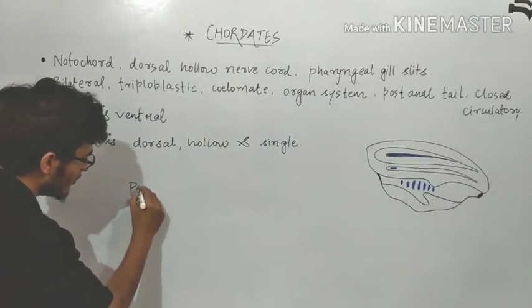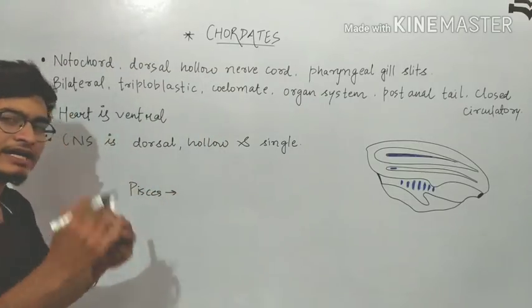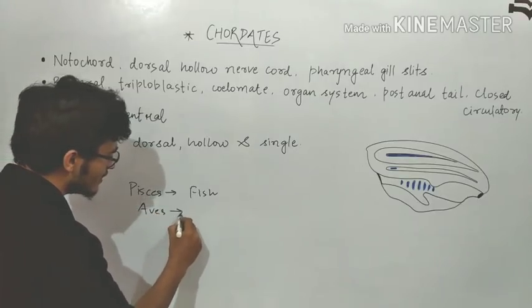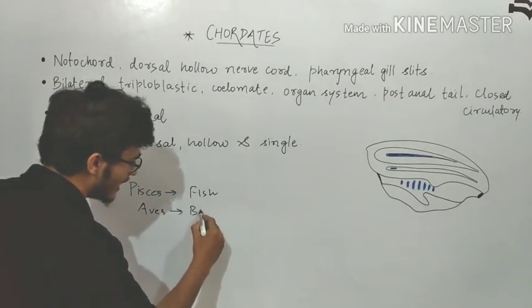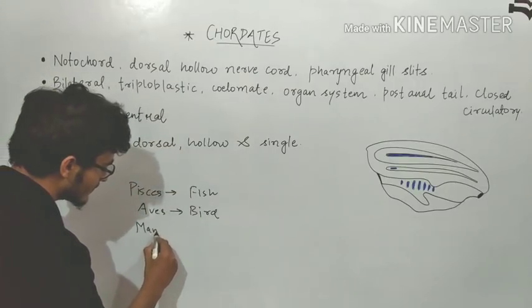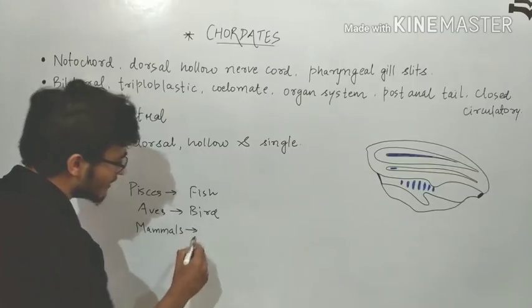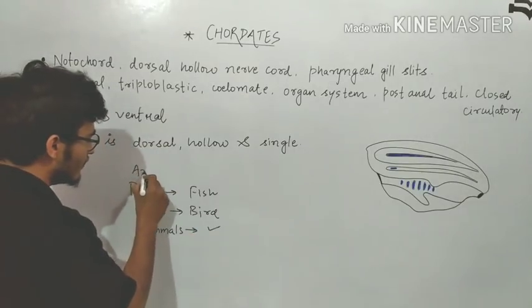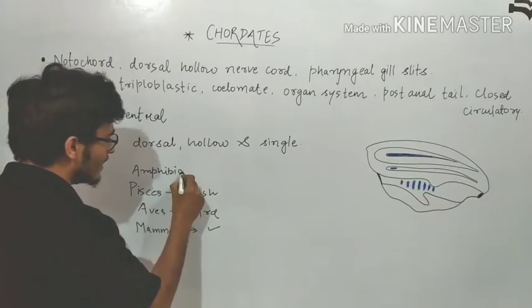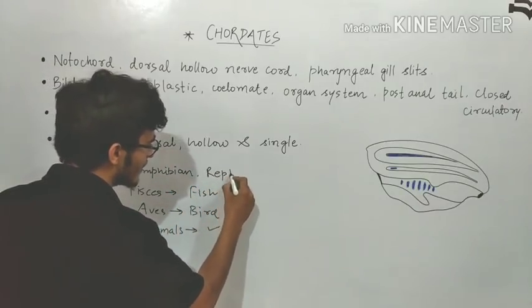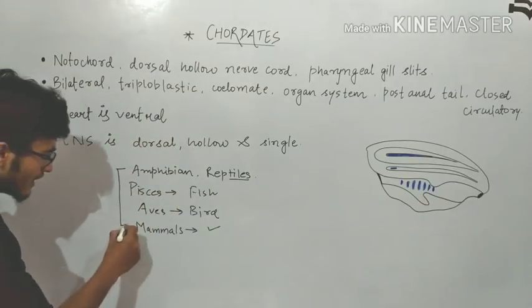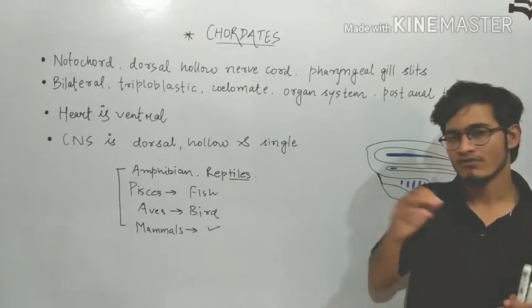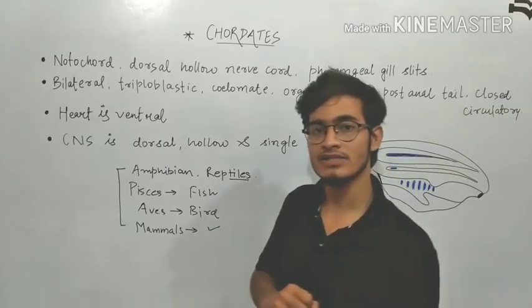And that example is surely going to help us to memorize all important features of that category. For example, if you talk about Pisces, you must have seen any kind of fish. If you talk about Aves, you must have seen any bird. If you talk about mammals, you must have seen many different kinds of mammals such as dogs, cats and even humans. If you talk about amphibians and reptiles as well, you must have seen them in your life. So these different categories and at least one organism that we must have seen in our life will help us to remember all the characters.